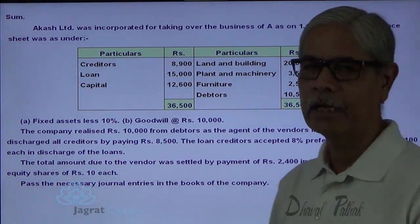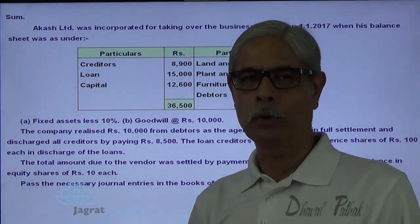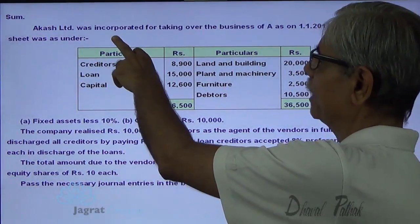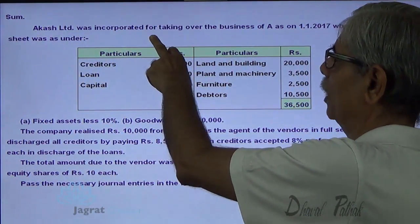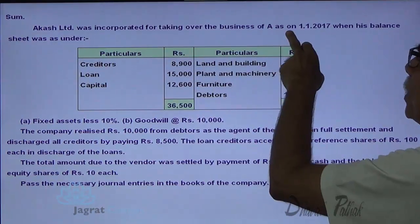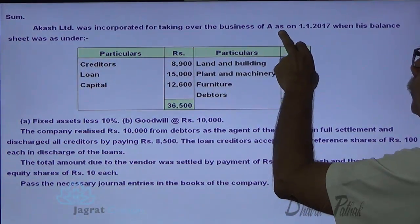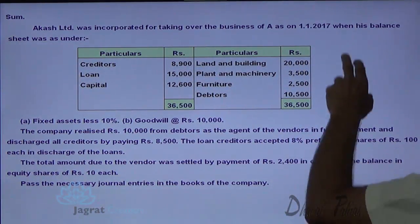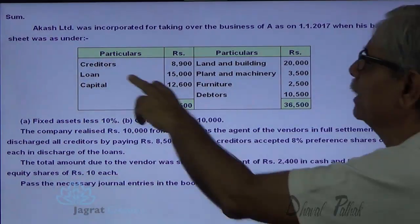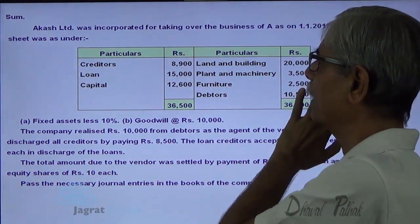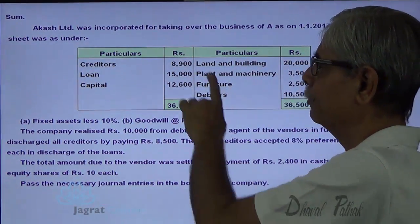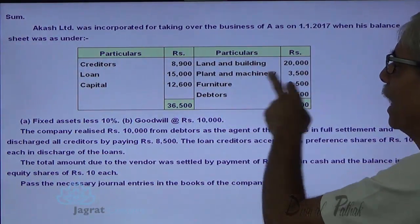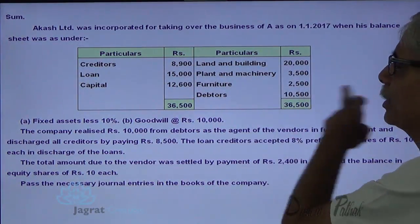This is the sum I intend to solve. Akash Limited was incorporated for taking over the business of A as on 1st of January 2017, when his balance sheet was as under. This is the balance sheet of Mr. A: creditors, loans, capital on one side; land and building, plant and machinery, furniture and other data on the other side.